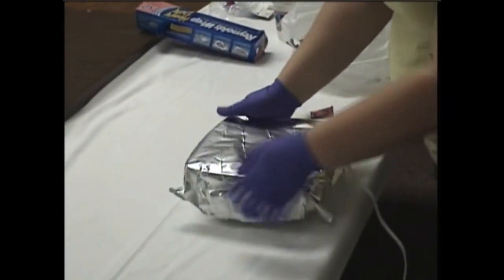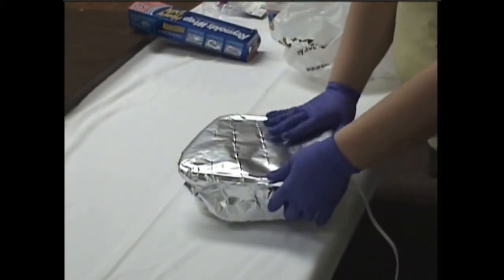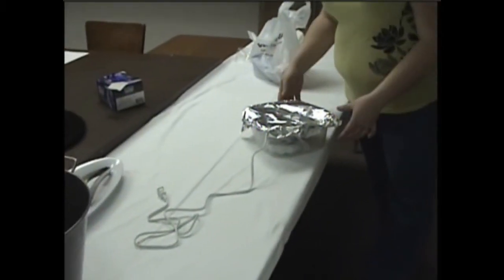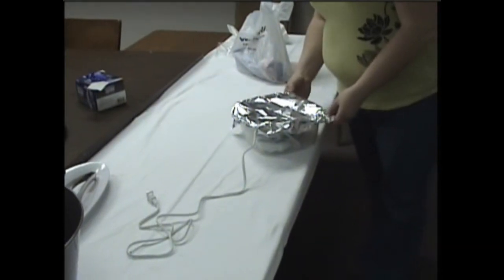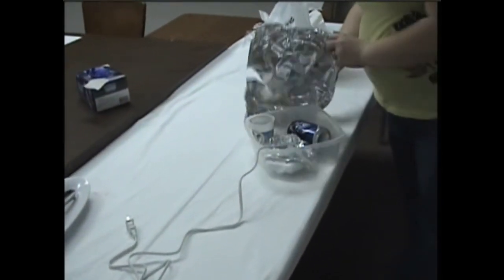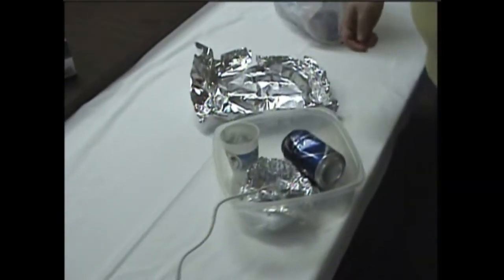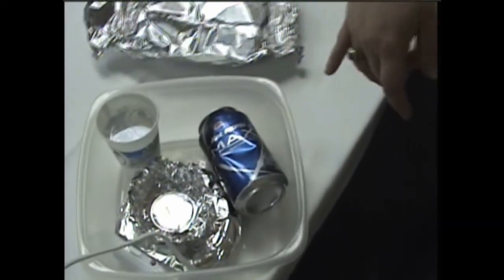Superglue fuming usually takes about 10 to 15 minutes to develop a print. After 15 minutes, we remove the lid from the chamber and see that our fingerprint has developed. You can see the ridge details in the print.